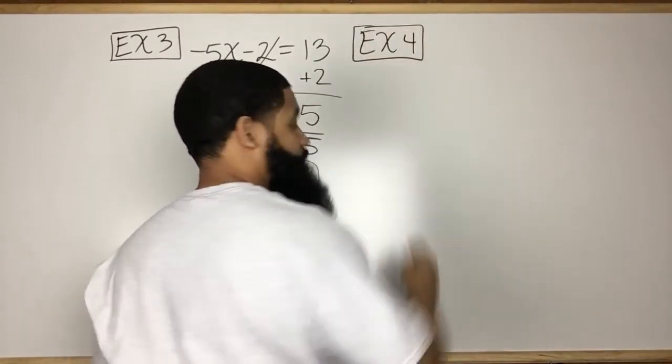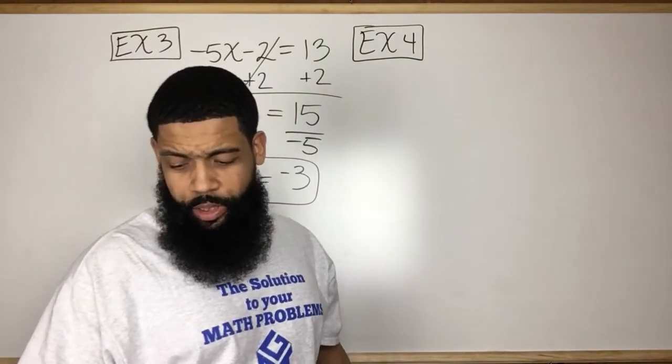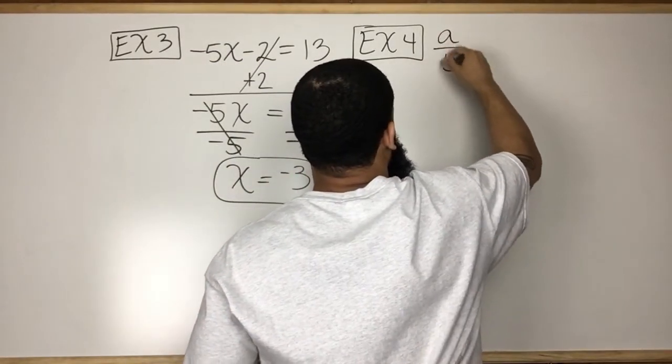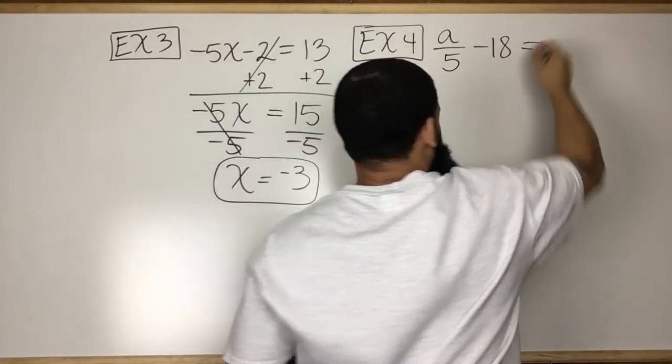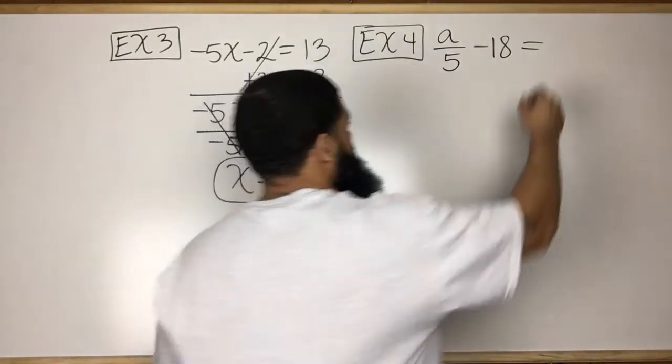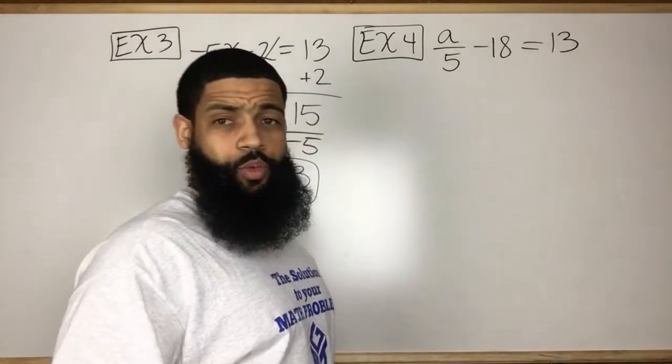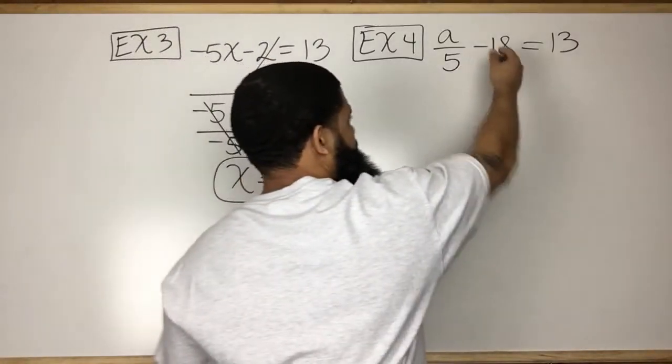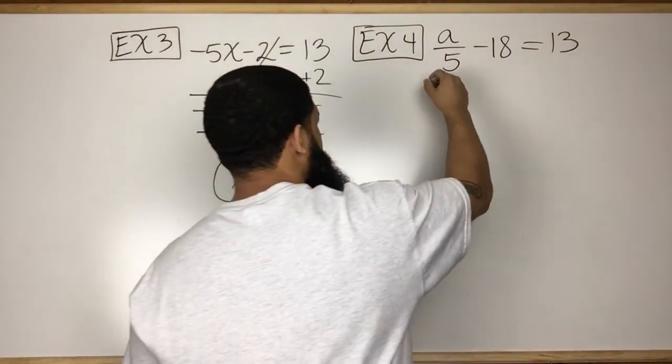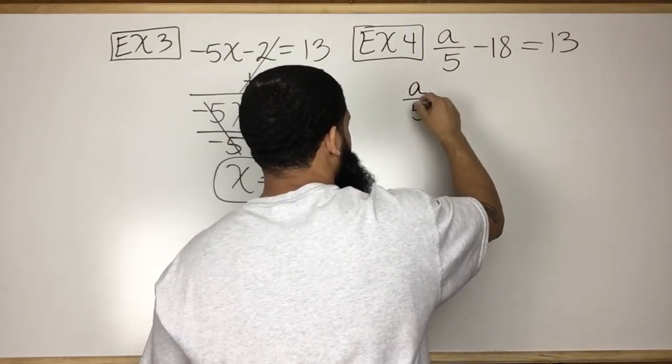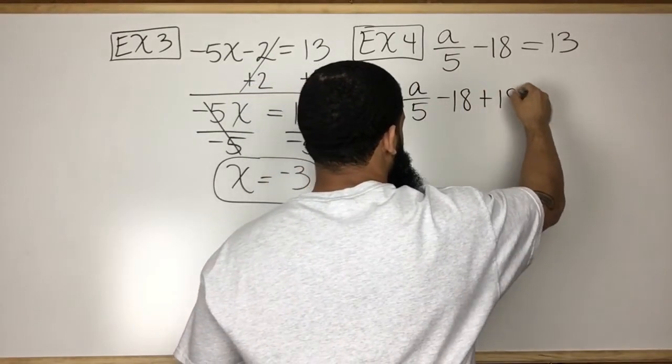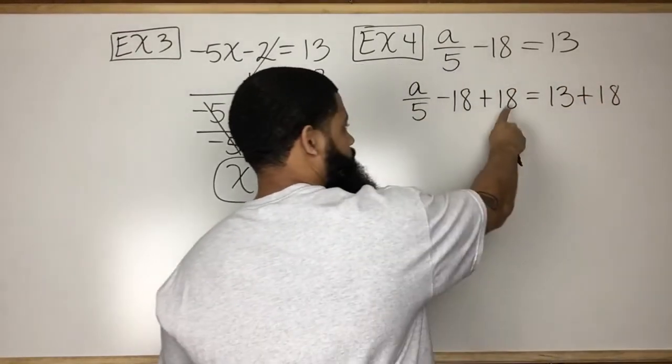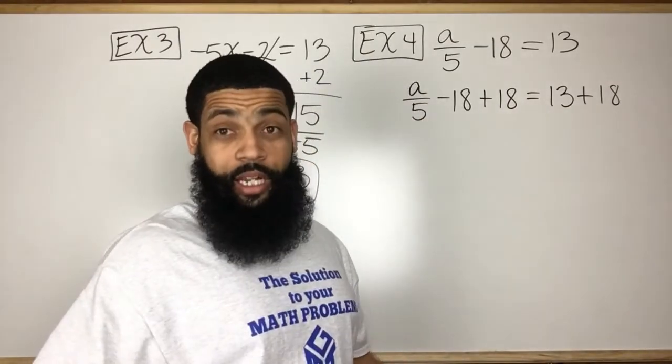We're going to keep doing more examples, because I want you to see the different types of examples that you'll see. A over 5 minus 18 is equal to 13. Now, in this case, I'm going to work it out horizontally, so you can see a different way. The opposite of subtracting 18 is adding 18. So, plus 18 is equal to 13 plus 18. So, notice that plus 18, that plus 18. We added 18 to both sides.